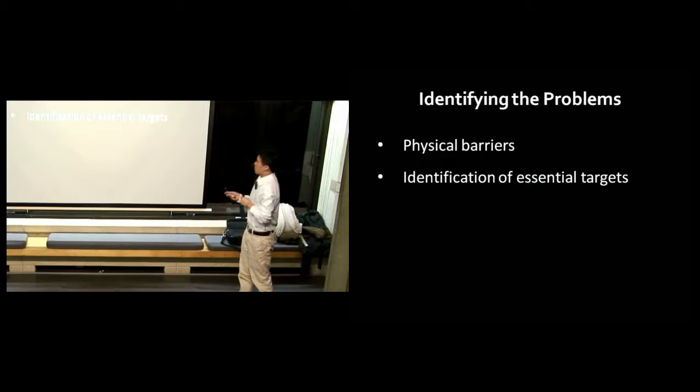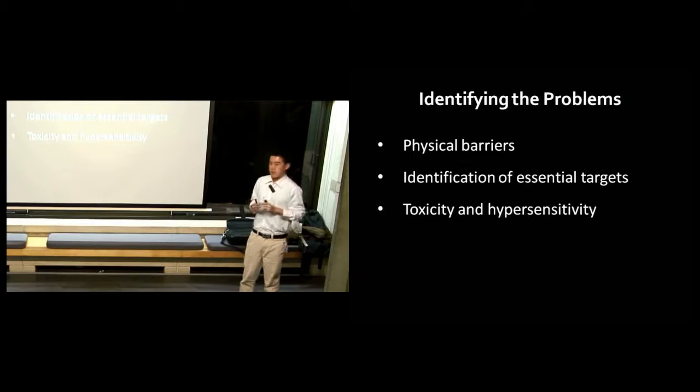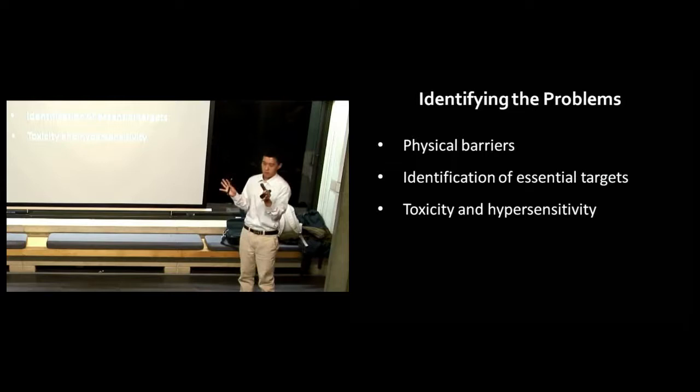An effective medication against Toxoplasma must cross multiple physical barriers. They must cross ocular membranes to get to where the parasites are at the back of the eyes, and they must cross the blood-brain barrier. That's the first challenge. The second challenge is identifying essential targets and genes for the parasites. The third problem has to do with the toxicity and hypersensitivity of current drugs. The gold standard for treating Toxoplasmosis right now is pyrimethamine and sulfadiazine, which has serious consequences in terms of toxicity and hypersensitivity. We need a model with low or no toxicity.